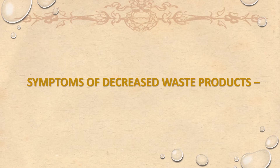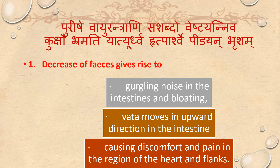Symptoms of decreased waste products. Decrease of Purisha (feces): Vayurandrani Sashabdo, Veshtayan Niva, Kukshubhramdhi. Decrease of feces gives rise to gurgling noise in the intestine and bloating. Vata moves in the upward direction in the intestine, causing discomfort and pain in the region of the heart and flanks.